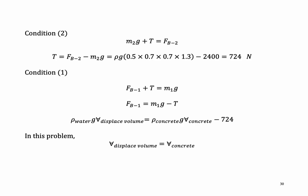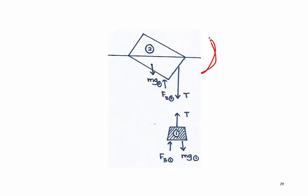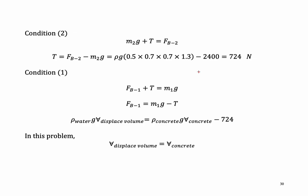For condition two, referring to block B, we can write: the weight for object number two plus the tension is equal to the force of buoyancy for object number two. We can then calculate the tension by rearranging the equation: tension equals FB2 minus M2G.